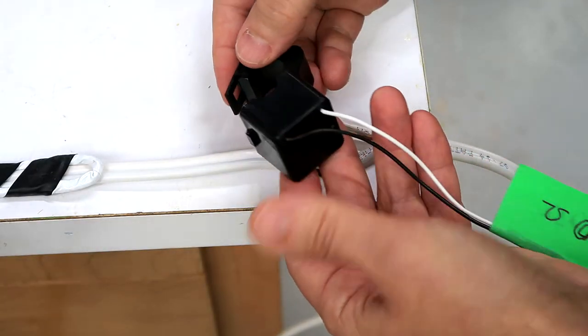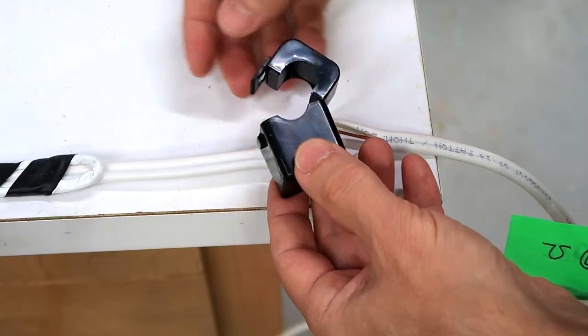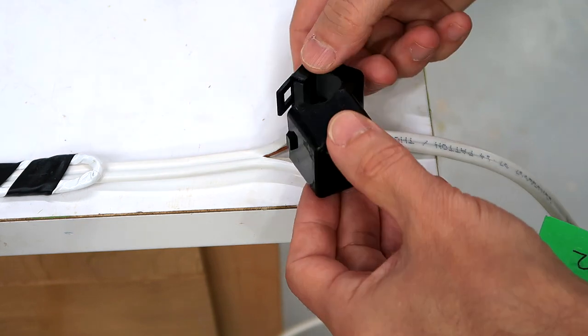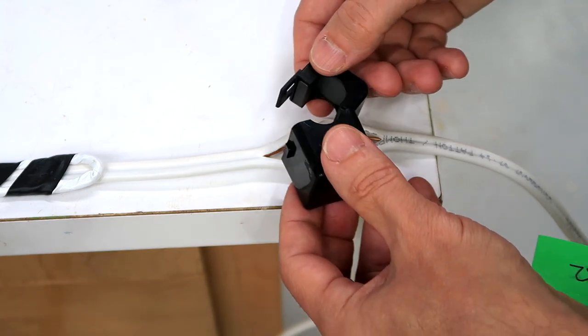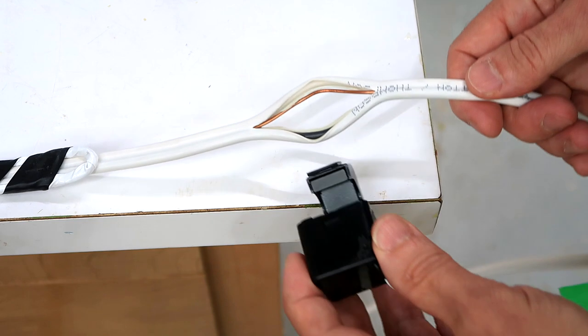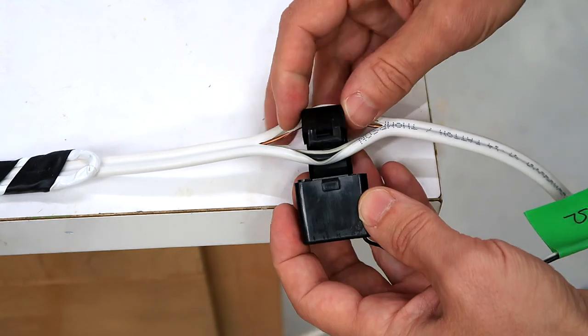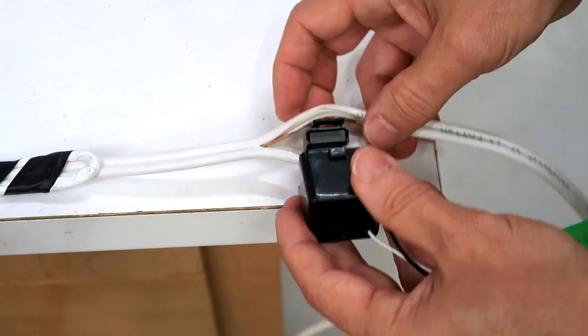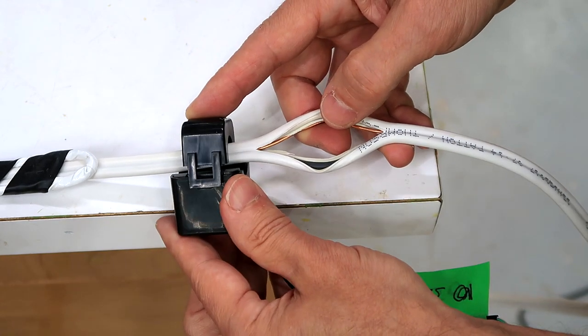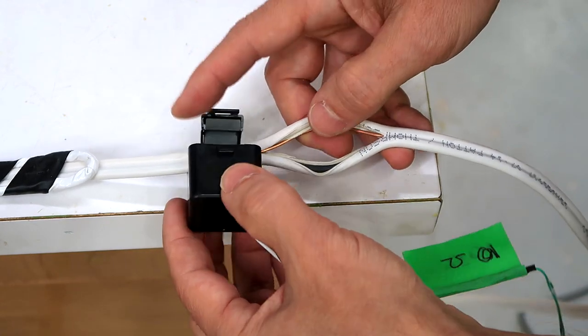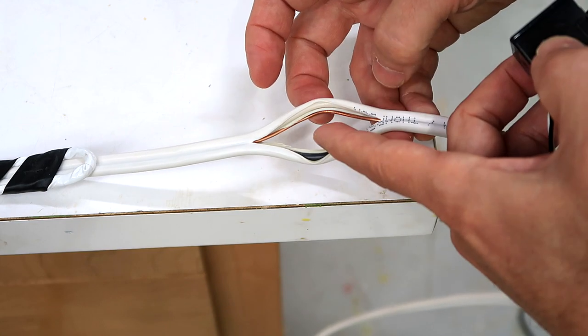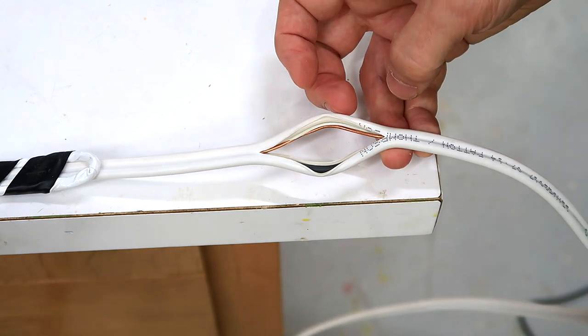Of course, there's these clamp-on current transformers that do pretty much what this does, but a much better job, much more sensitive. All I have to do is clamp it around one of the conductors. If I put it around both conductors, they just cancel each other out. All I have to do is split the wire, but that's exactly what I'm trying to avoid.